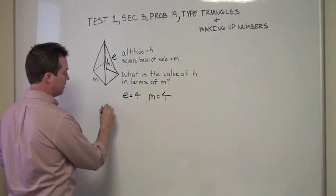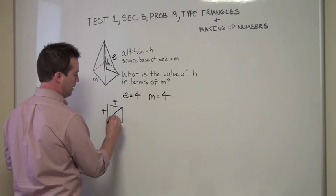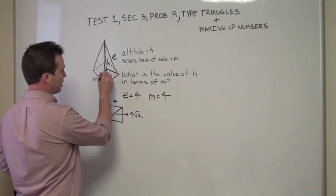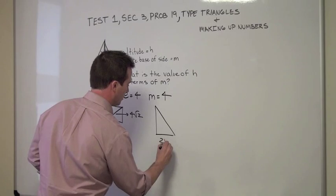Now, since the base of the square of our pyramid is now a 4 by 4, then the diagonal becomes 4 root 2, and since we're looking for half the diagonal, that piece of the triangle now becomes 2 root 2.